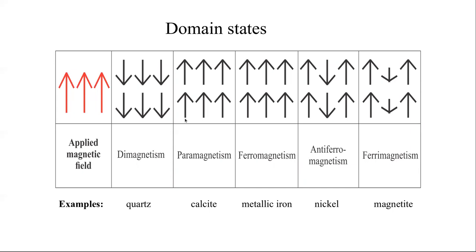Domain states are microscopic properties preserved in magnetic minerals. Magnetic grains within magnetic minerals have magnetic moments, indicated by arrows showing the direction of those moments. If the rock sample behaves completely opposite to the applied magnetic field direction, that material is known as diamagnetic material — for example, quartz.